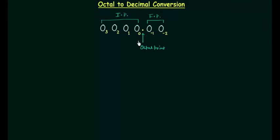In order to find out the decimal equivalent of this octal number, we have to multiply the coefficients. O0, O1, O2, O3, O-1, O-2 are the coefficients of this octal number and we have to multiply these coefficients by their weights. So let's start with it.